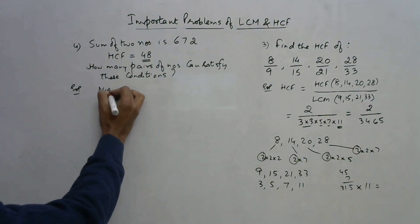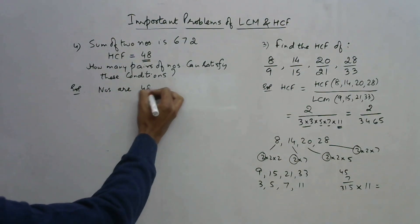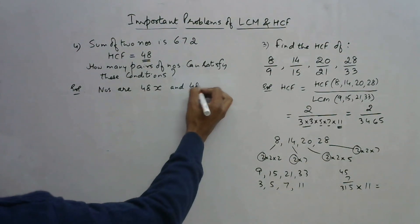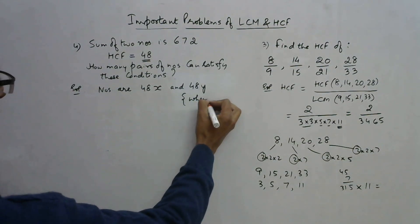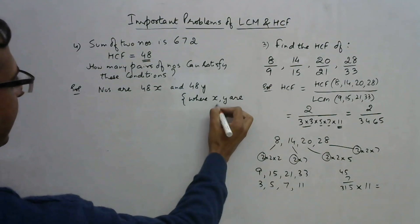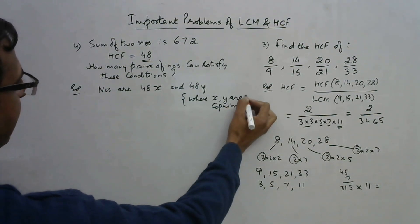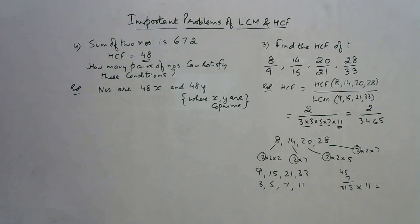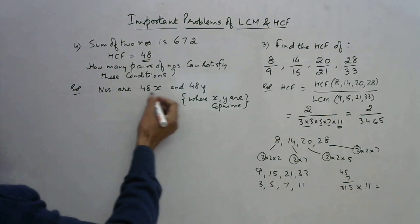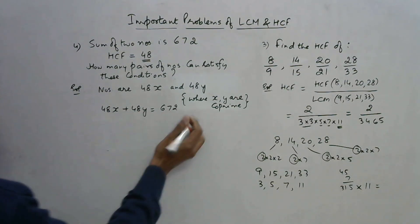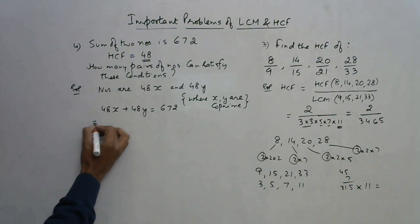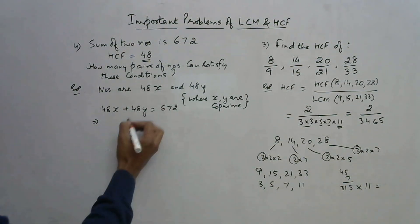If the HCF is 48, which is the highest common factor of those two numbers, then the numbers are 48x and 48y, because 48 is the common factor and x and y are coprime. We are given that the sum of the two numbers is 672, so 48x plus 48y equals 672.